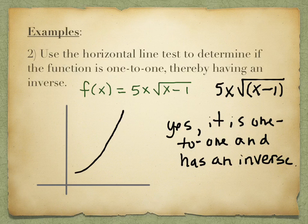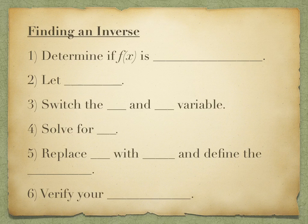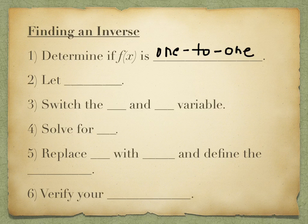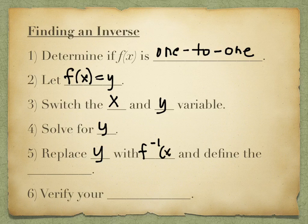As long as you can draw the graph, problems that ask you to use the horizontal line test are pretty straightforward. Once we know it has an inverse, the question is how do we find it? The first thing you have to do is determine if f of x is one-to-one. Once it is one-to-one, you let f of x be replaced by y. Then you switch the x and the y variables. After switching, you solve for y. After solving for y, you replace the y with f inverse of x notation.